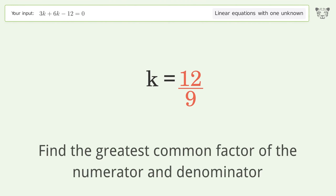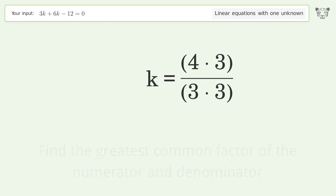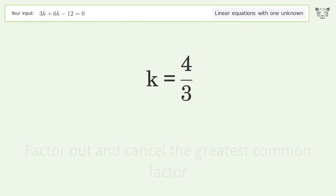Find the greatest common factor of the numerator and denominator, then factor out and cancel the greatest common factor. The final result is k equals 4 over 3.